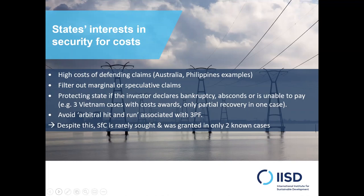And finally, to avoid the issue of arbitral hit-and-run, which is increasingly a concern for states with third-party funding — where a speculative or marginal case is funded by a third party who does not commit to paying an adverse costs order against the investor if they lose. So that's another reason why states have an interest in security for costs orders. Despite all these compelling interests, it's actually quite rarely sought by states, and has only been granted in two known cases.